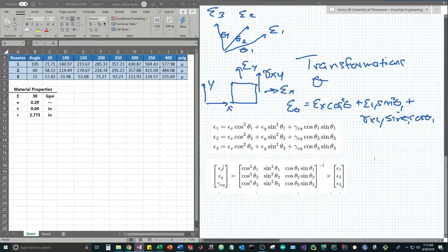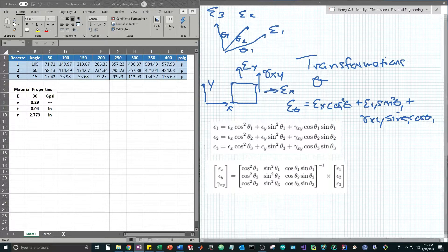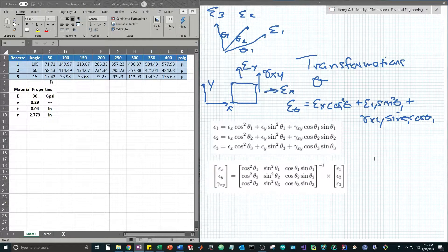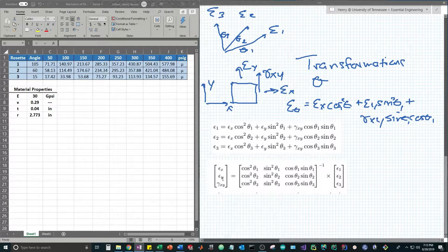This tells us that the strain matrix epsilon x, epsilon y, and gamma xy is the inverse of the angle matrix multiplied by the set of three strain values measured. At each state of applied pressure we're going to have a different set of three normal strain values.